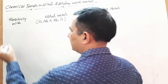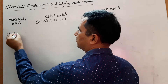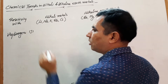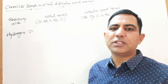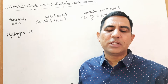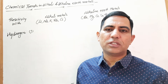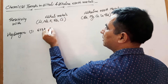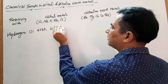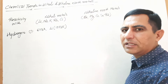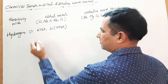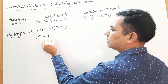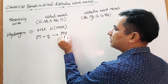First we discuss reactivity towards hydrogen. All the alkaline metals react with hydrogen at 673 Kelvin temperature, except lithium, which reacts at a higher temperature of 1073 Kelvin. All the alkaline metals react with hydrogen and form binary hydrides. Using the symbol M for metal, they react with hydrogen and convert into MH type of hydrides.